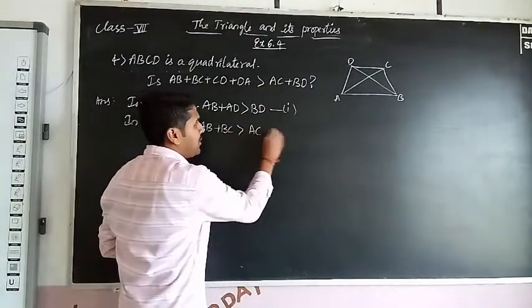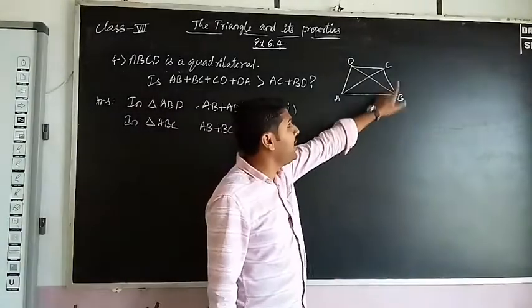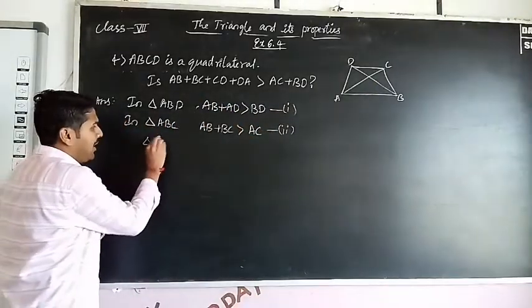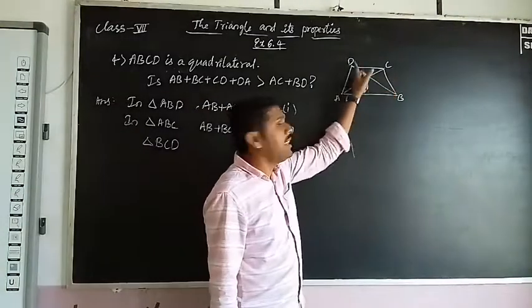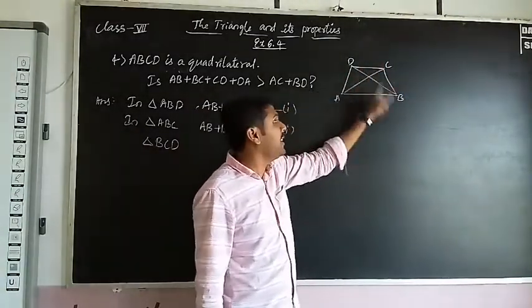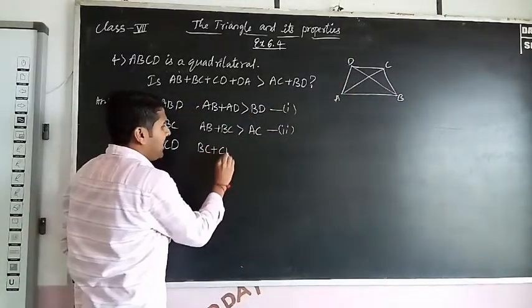Next take this one, BCD. In a triangle BCD, BC + CD is greater than BD. So BC + CD is greater than BD.